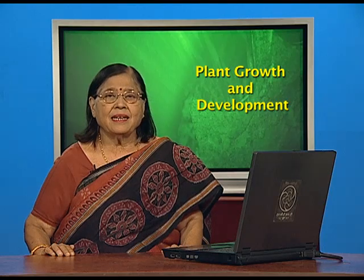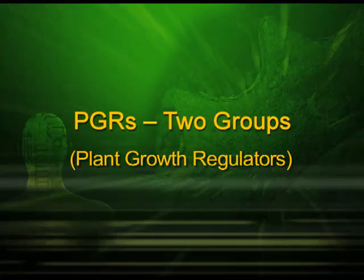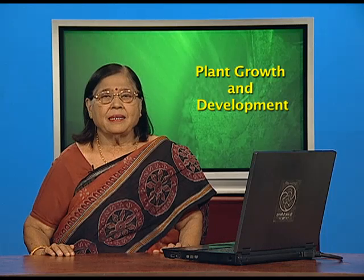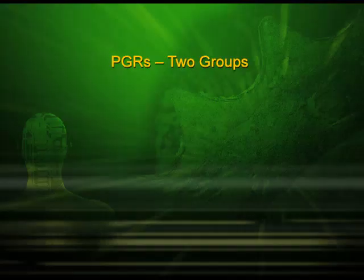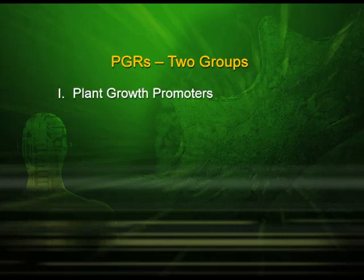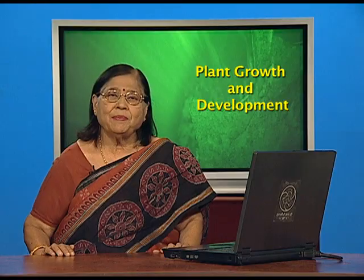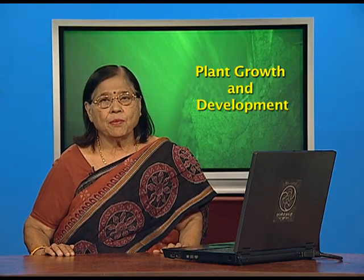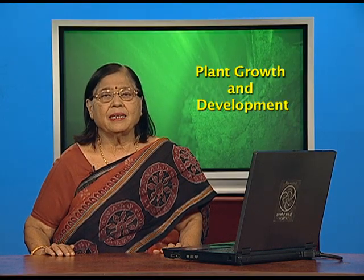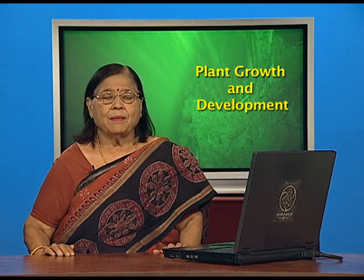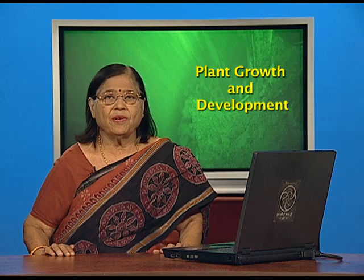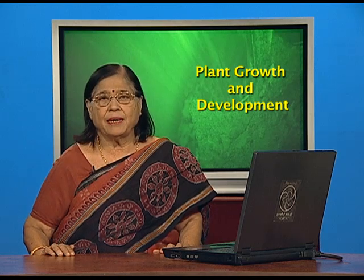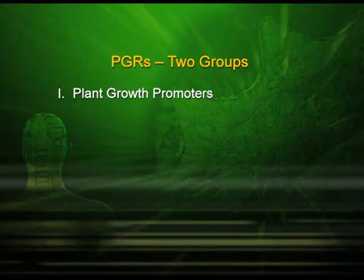Plant growth regulators, PGRs, can be put into two groups. The first group will be plant growth promoters — those PGRs which are promoting the growth of the plant somewhere or the other. The plant has so many tissues, so many areas, so many kinds of places where growth is taking place, so it is acting as a promoter.